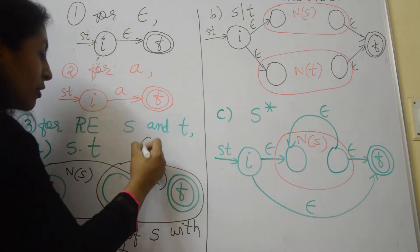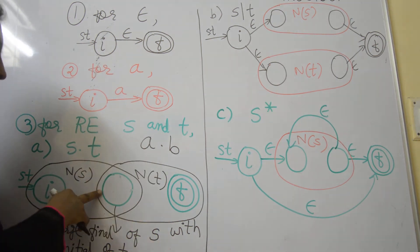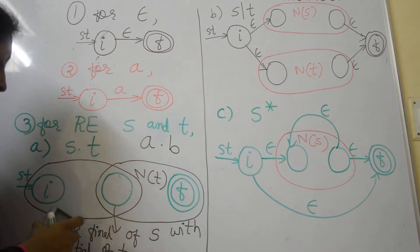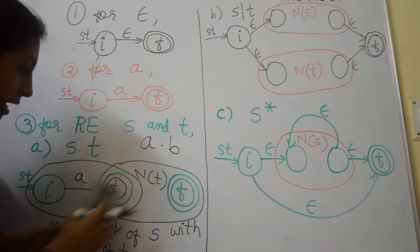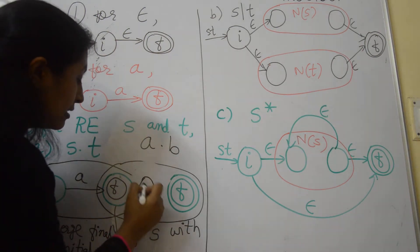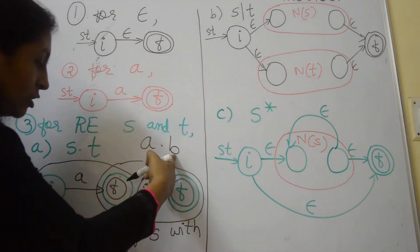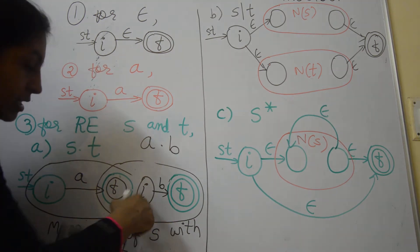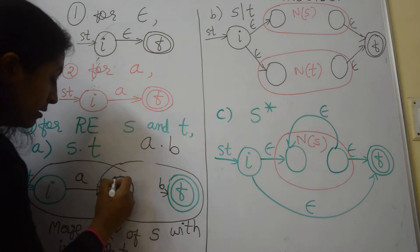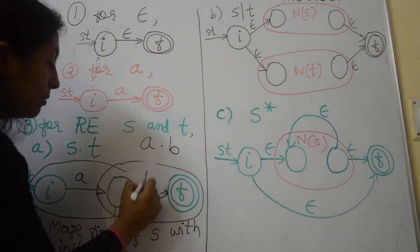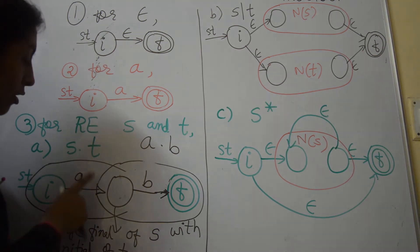For example, if we take concatenation A·B, then S is A and T is B. Construct NFA of A: initial state transitioning on A to the final state of A. Then for B: initial state of B transitioning on symbol B to the final state. To construct A·B, merge the final state of A with the initial state of B, resulting in only three states — one initial, one merged state, and one final.